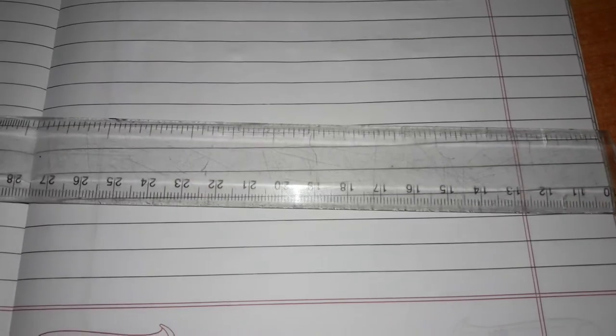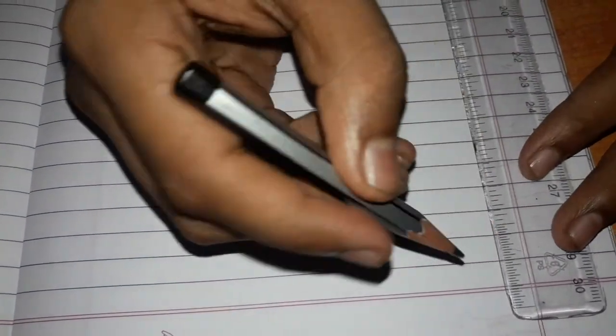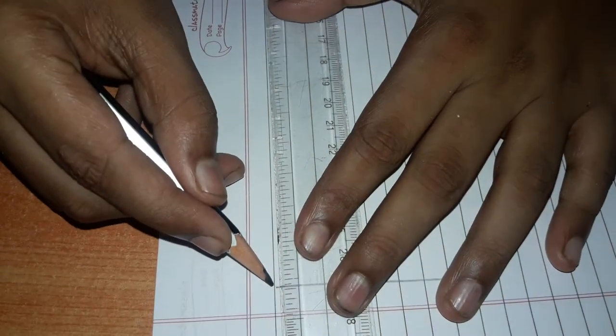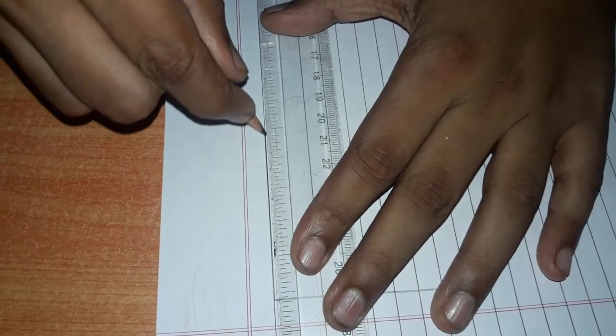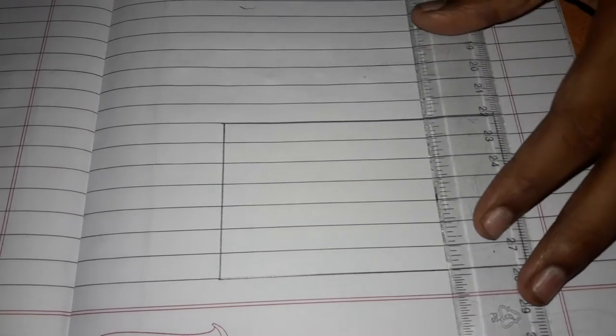First take a ruler, a pencil, and draw a rectangle like this as shown. After drawing the rectangle like this, divide it into lines like this.